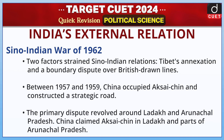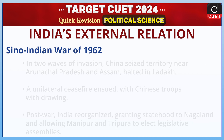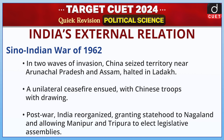Sino-Indian War of 1962: Two factors strained Sino-Indian relations — Tibet's annexation and a boundary dispute over British-drawn lines. Between 1957 and 1959, China occupied Aksai Chin and constructed a strategic road. The primary dispute revolved around Ladakh and Arunachal Pradesh. China claimed Aksai Chin in Ladakh and parts of Arunachal Pradesh. In two waves of invasion, China seized territory near Arunachal Pradesh and Assam, and halted in Ladakh. A unilateral ceasefire ensued, with Chinese troops withdrawing.